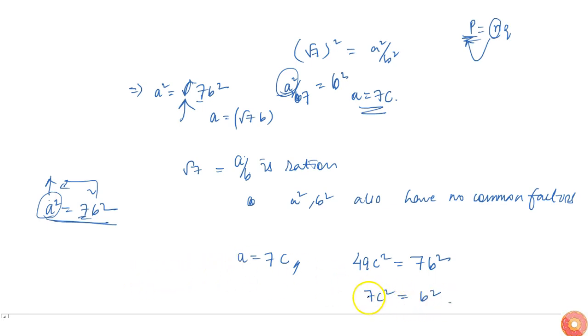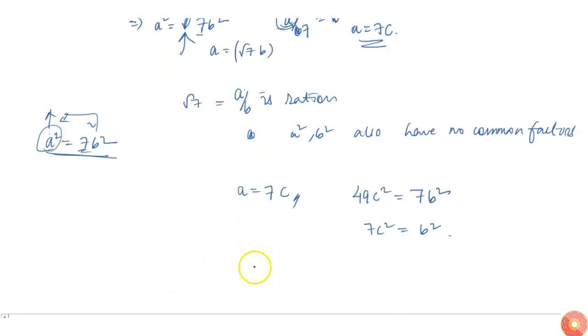And from the previous logic, this must imply that b is having 7 as a factor. Now that means b is having 7 as a factor, but if b has 7 as a factor, then a/b can't be written as this rational thing.